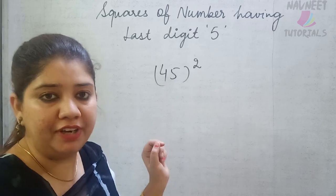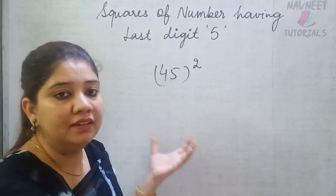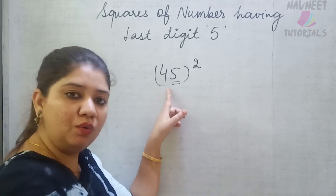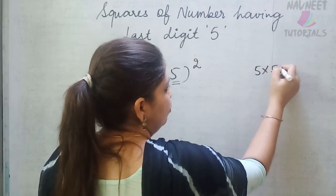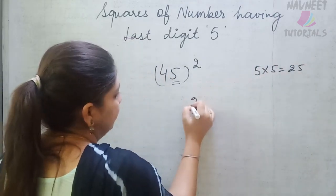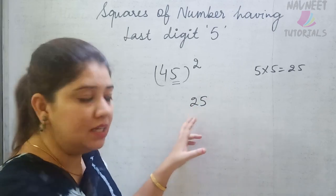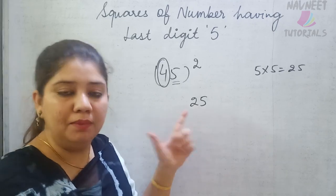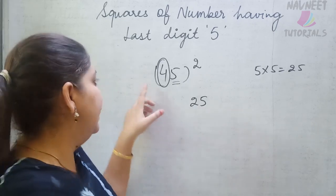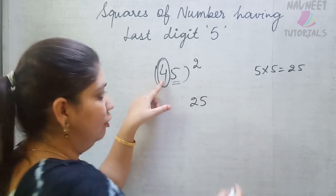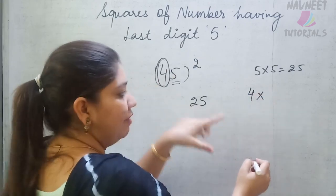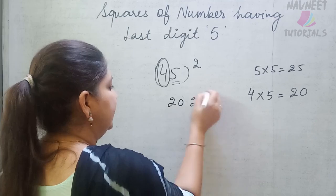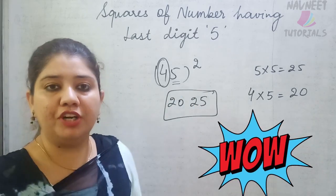The trick is that if the unit digit of a number is 5, the last two digits of the answer will always be 25. Then take the remaining digits — for example, for 45, take 4 — and multiply it by the next number, which is 5. So 4 times 5 is 20. Write 20 at the front, giving us 2025 as the answer for 45 squared.